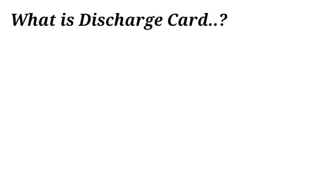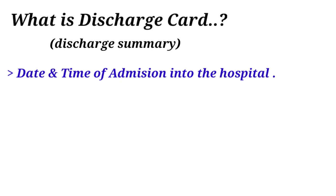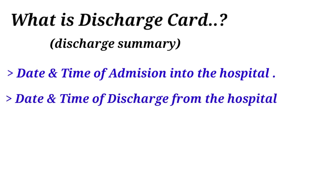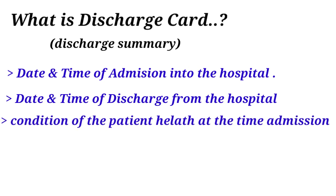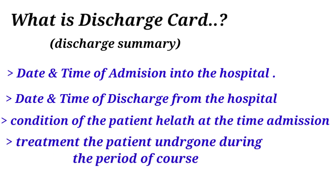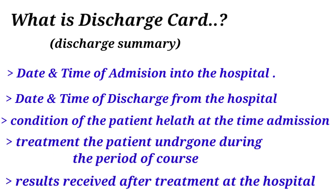A discharge card — or we can also call it a discharge summary — is a document which contains the summary of all the details of the patient, like the date and time of admission into the hospital and date and time of discharge from the hospital, the condition of the patient's health at the time of admission, the treatment that the patient underwent during the period of course, and the results received after treatment. Some more details of the patient and treatment, along with the overall summary, will be there in the discharge card.